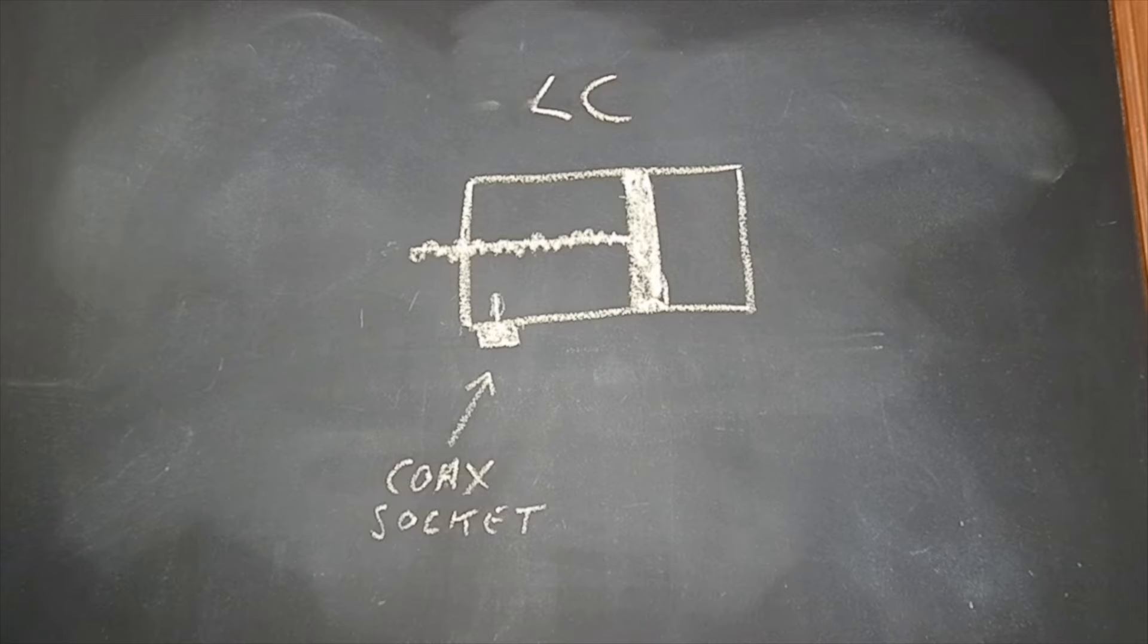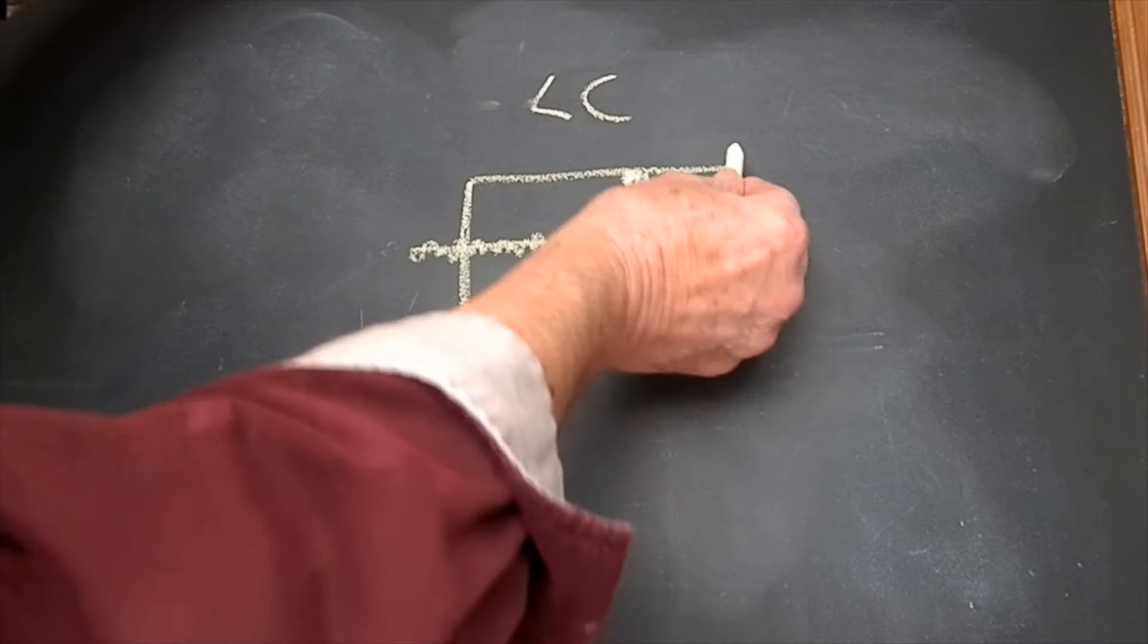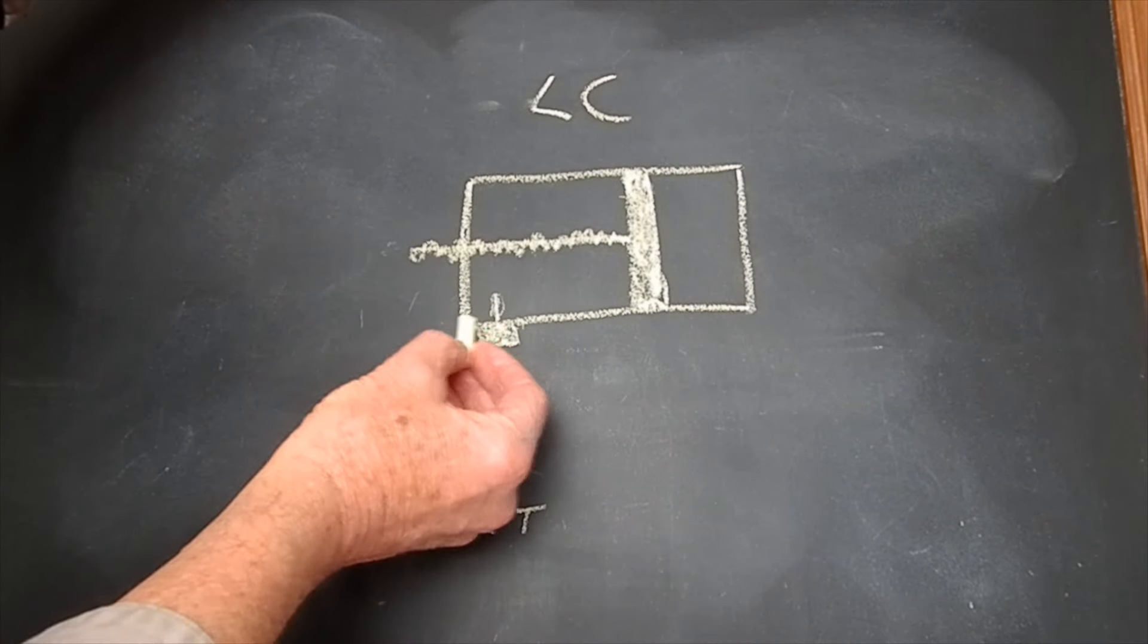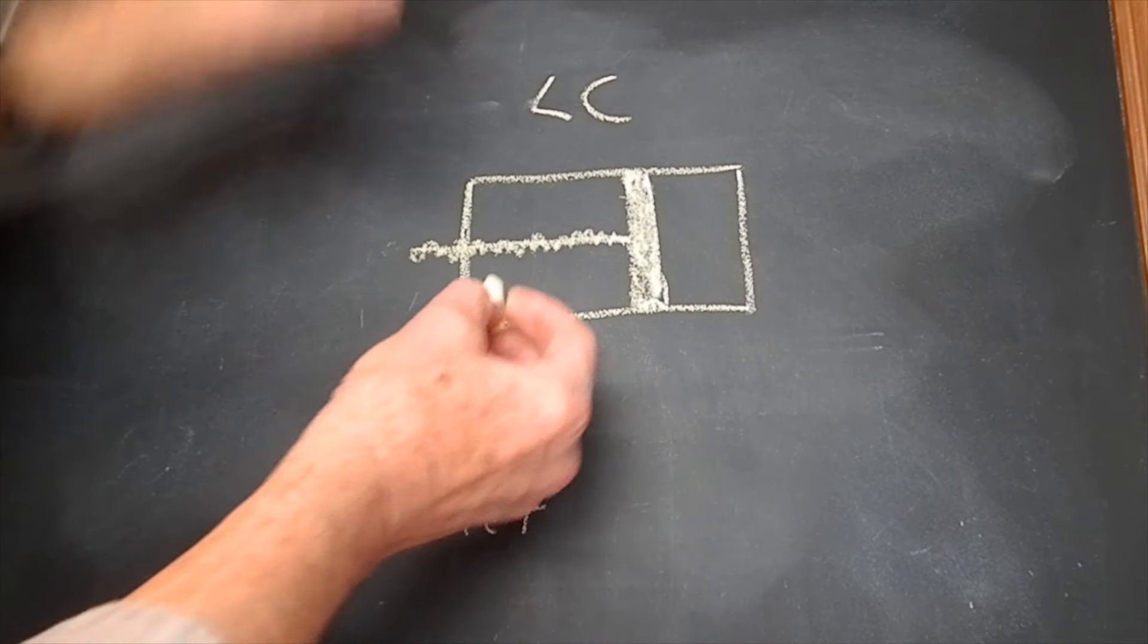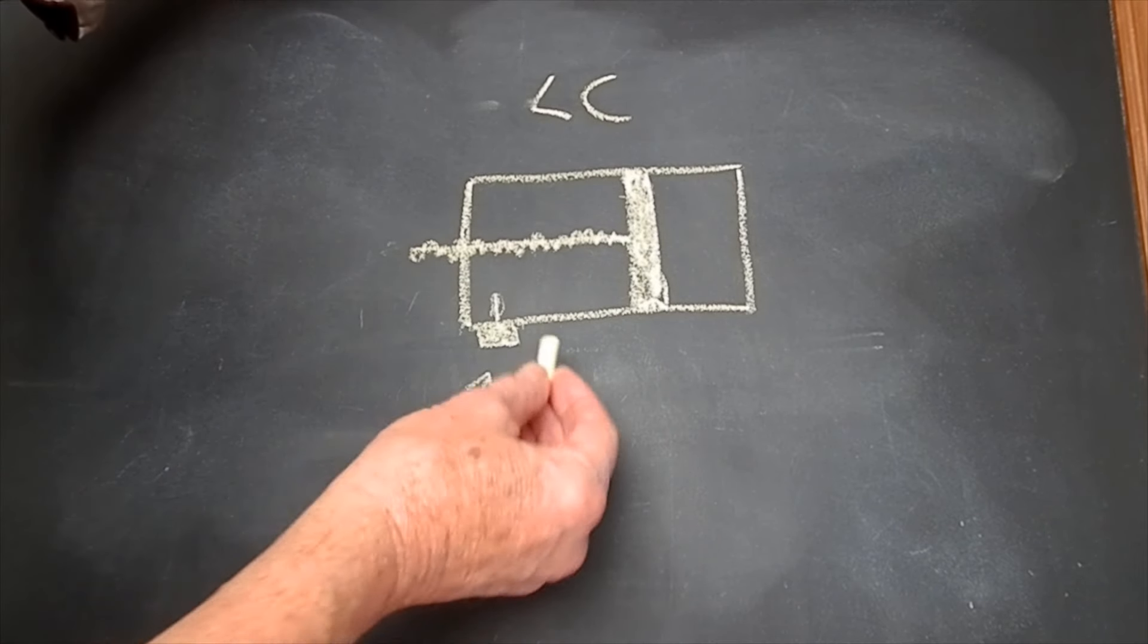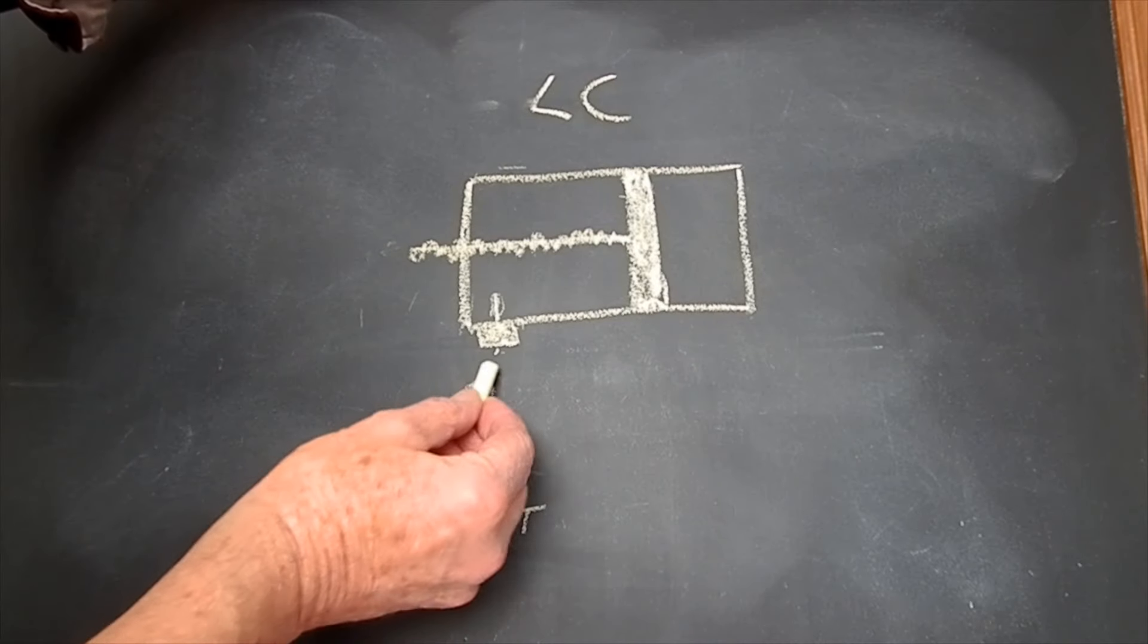That duplexer I just showed you is a four pole device. This is a cavity, so it's got four of these in it, four cavities. This is square on ours, it's an oblong square box. Very often they're cylindrical, that doesn't matter. So this is the metal cavity, there's a coax socket there.